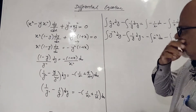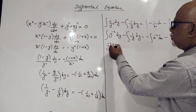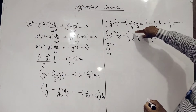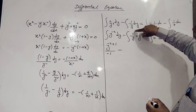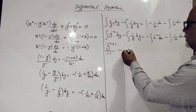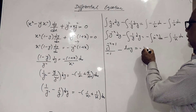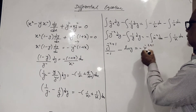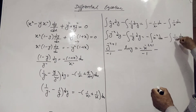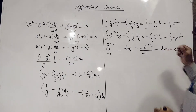Now we integrate. For y to the power minus 2: integrate to get y to the power (minus 2 plus 1) divided by (minus 2 plus 1), which gives minus y to the power minus 1. The integral of 1/y is ln y. Similarly, the integral of 1/x is ln x. We add the constant of integration, plus c.